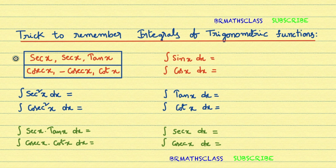Now observe this box. You see secant x, secant x, tan x — secant x appears two times and tan x appears one time. Observe the second row: cosecant x, minus cosecant x, cot x — cosecant x appears two times, one with a positive sign and one with a negative sign, and the other is cot x.